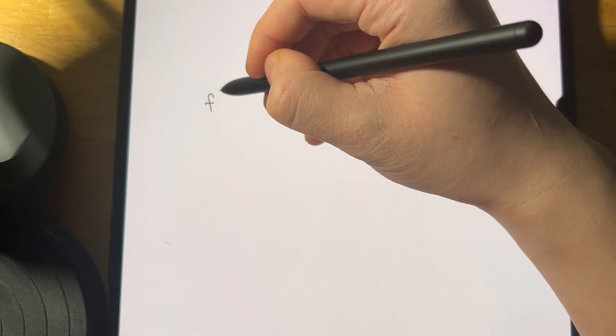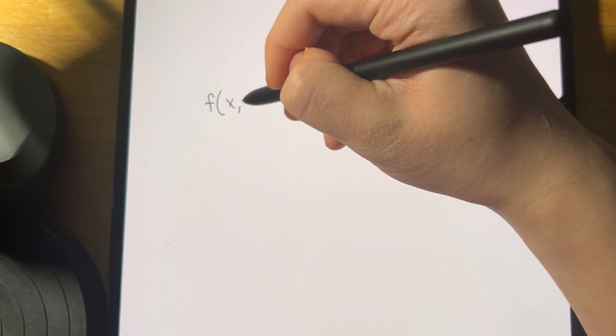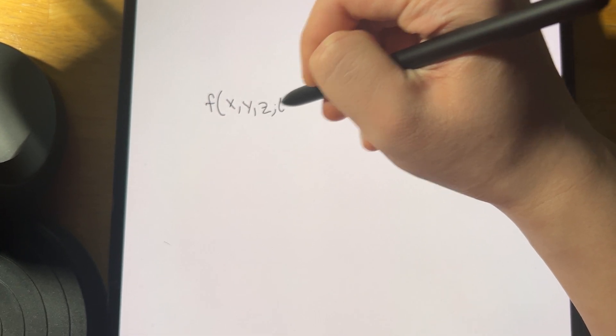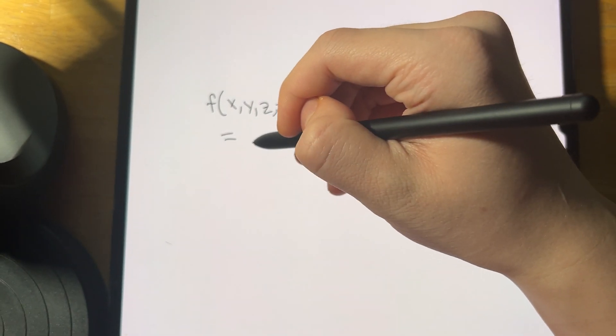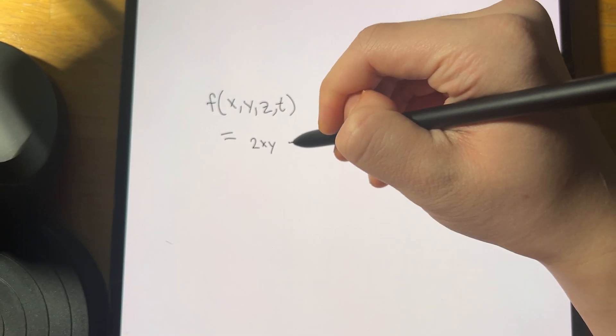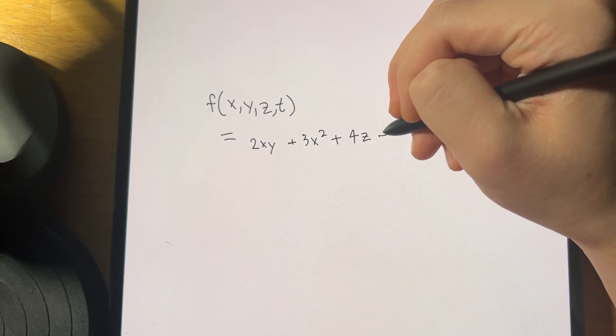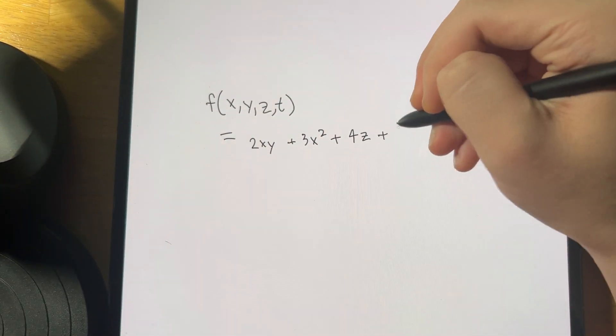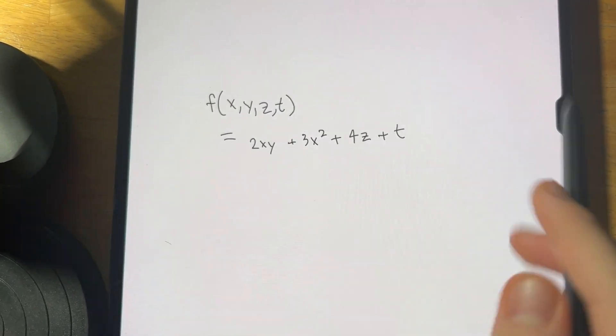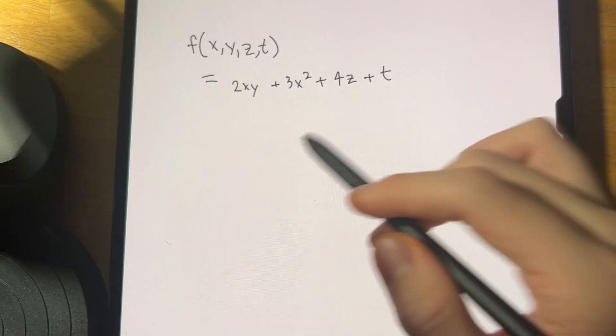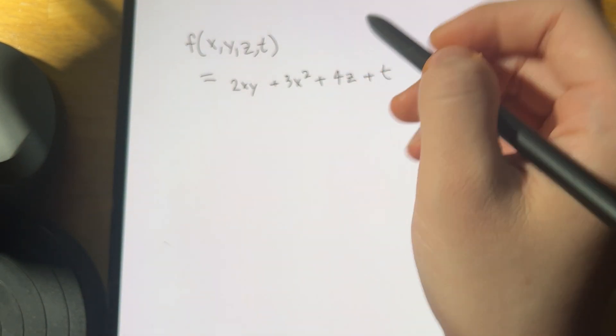Just in case you forgot how to do partial derivatives, let's do an example as a refresher. Let's say you have a function that's not just a function of x, but of x, y, z, t, such that f = 2xy + 3x² + 4z + t. That's a simple function — it can get more or less complicated — just a random example so you remember what's going on.